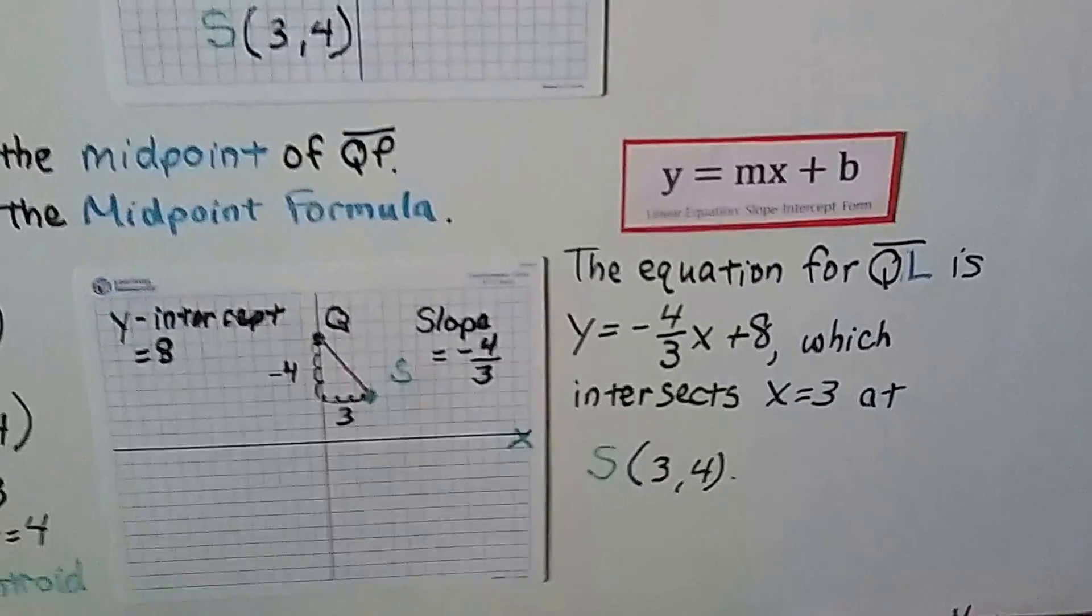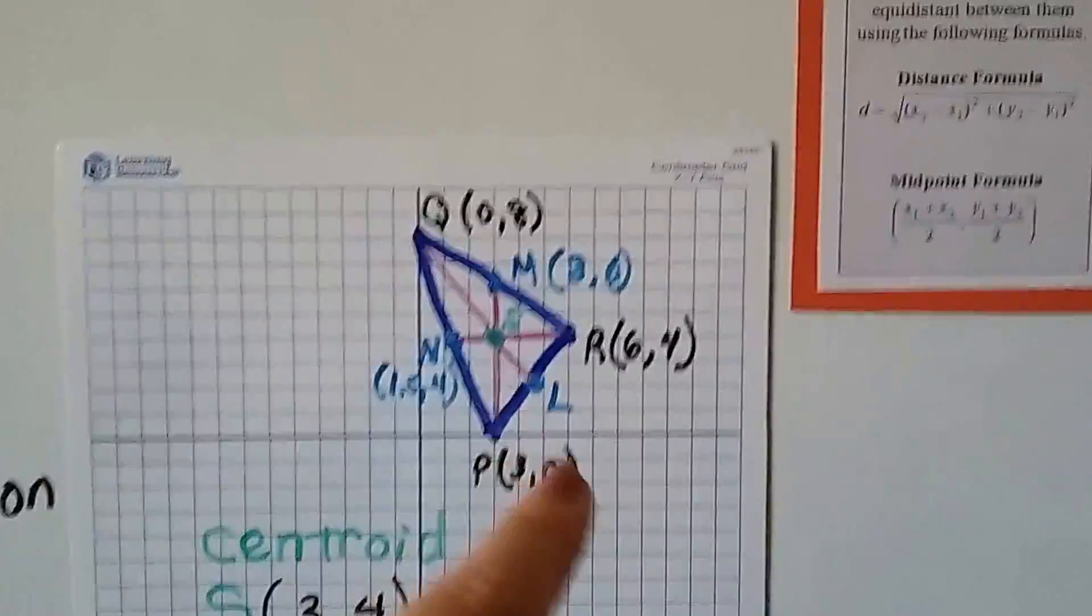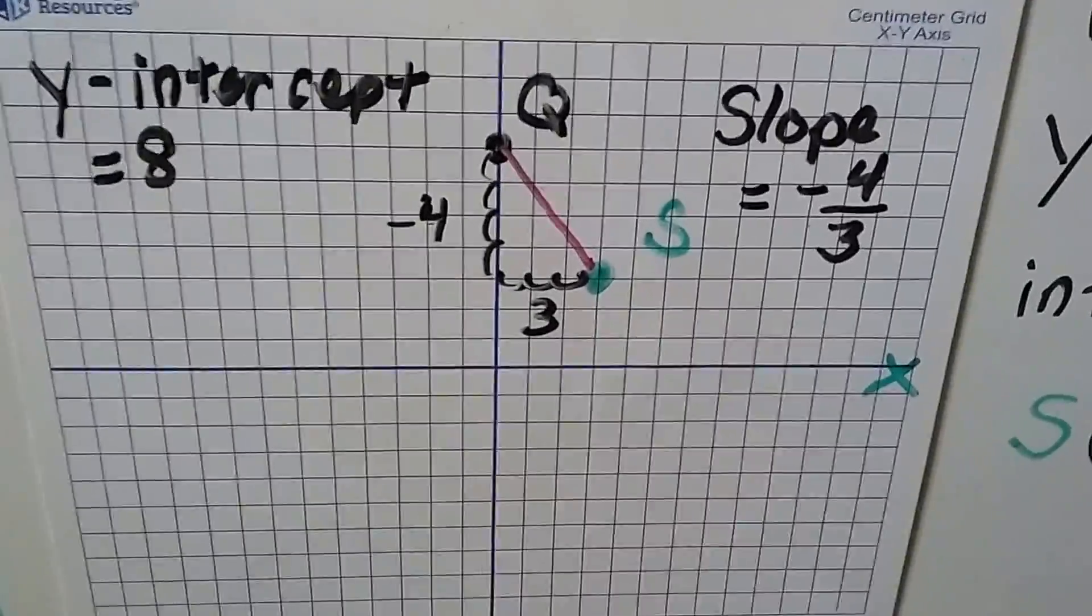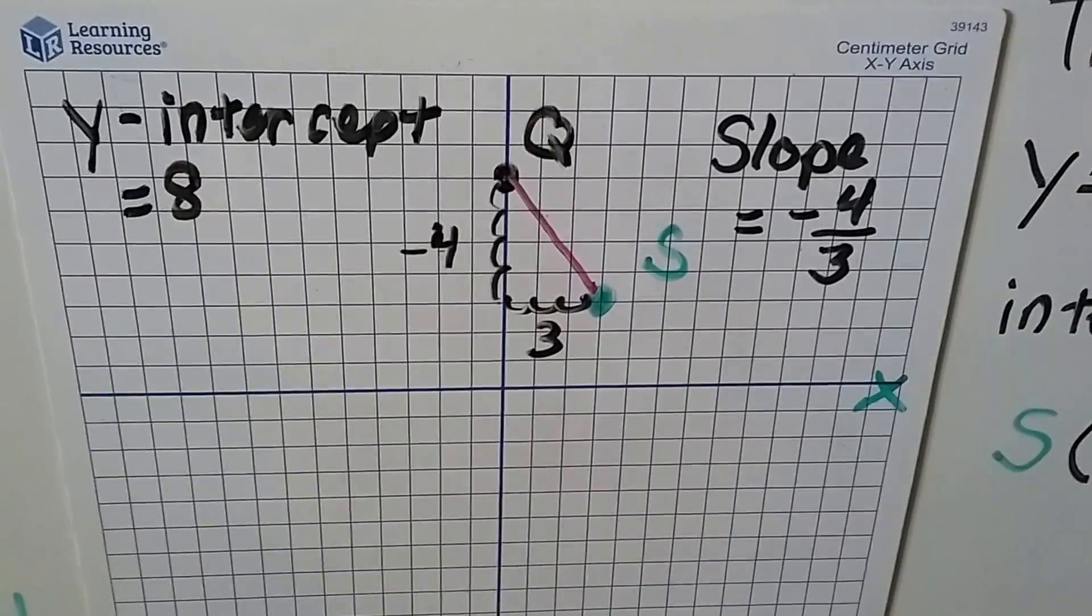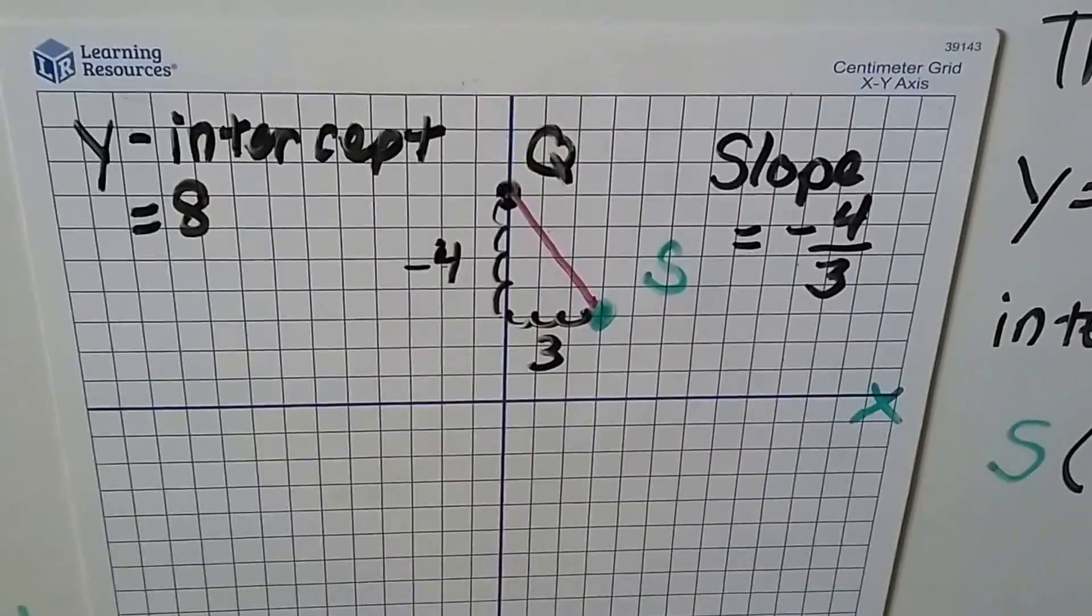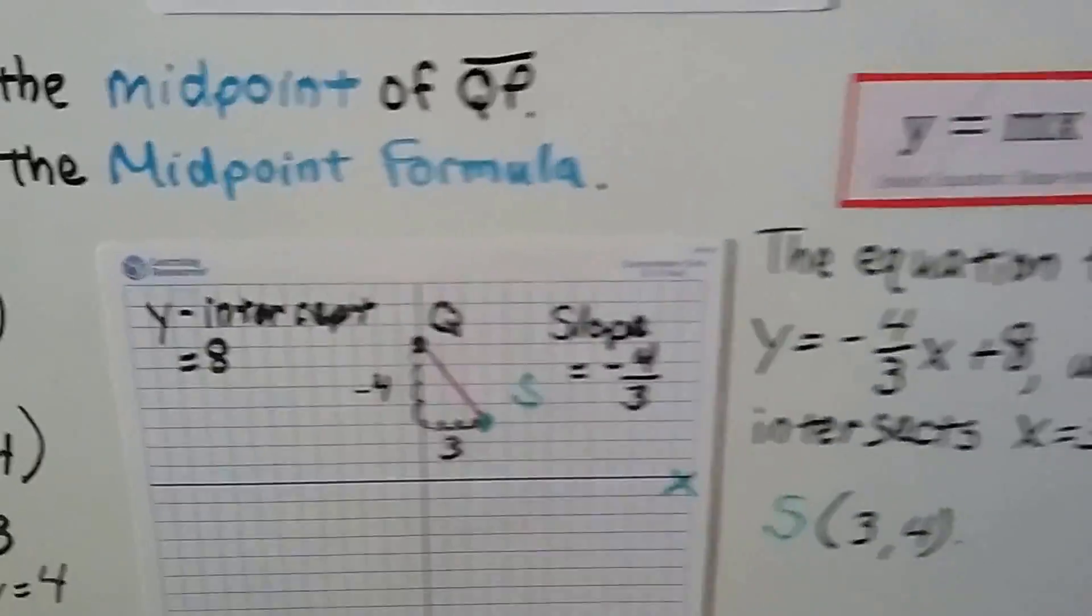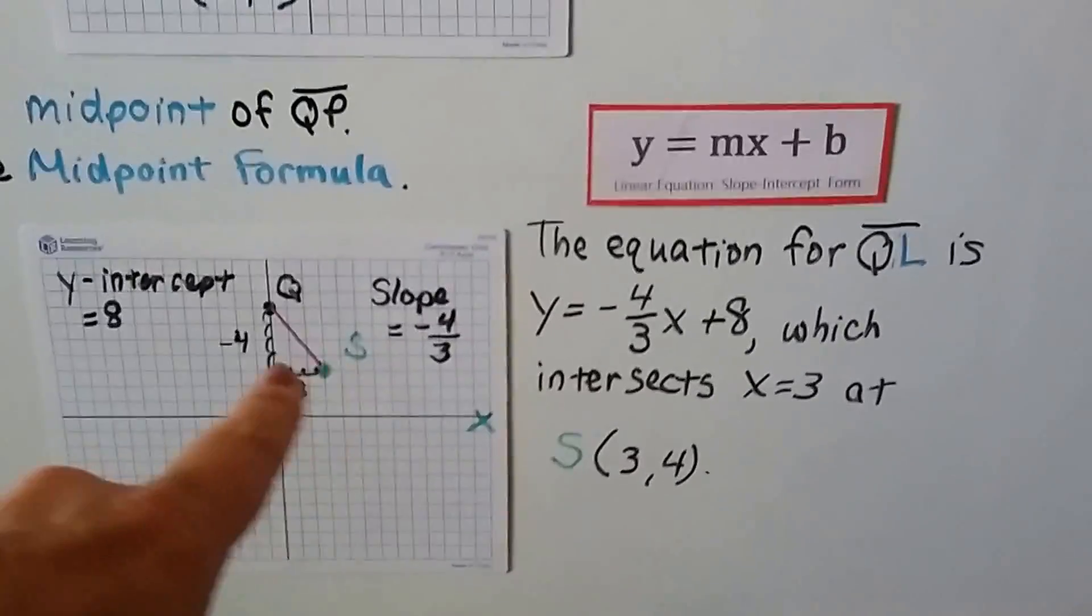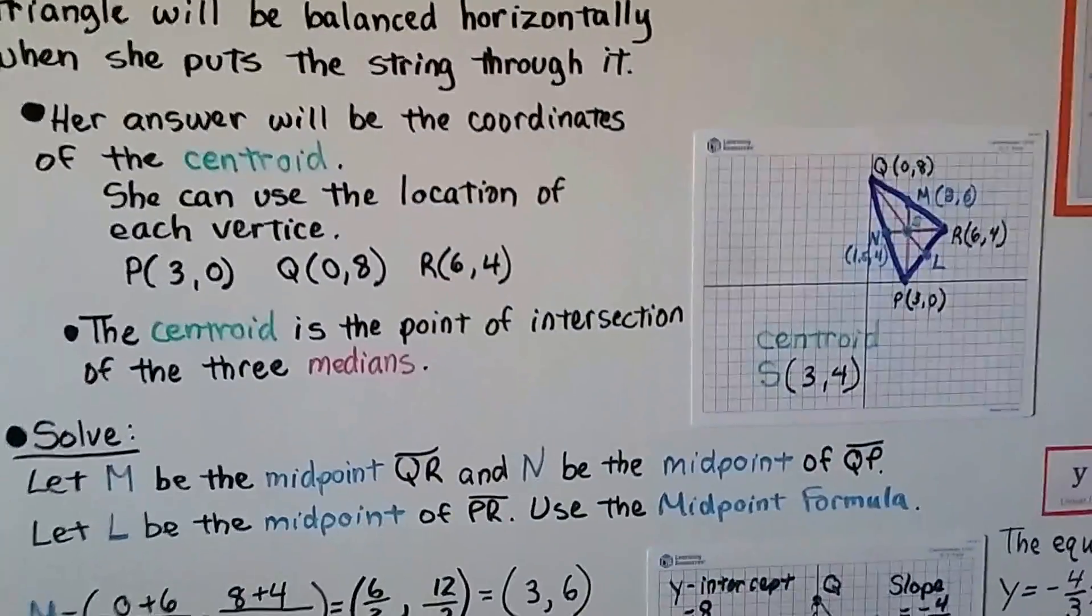Now, the equation for QL is y equals negative 4 thirds x plus 8. So if you look at QL here, we can go from Q to S, because it's linear, and we can see from Q to S, it's sloping downwards to the right, so it's a negative slope. That's a negative 4 for our rise, and then our run is 3 going across, so it's negative 4 thirds slope. And the y intercept is at 8. Q is at 8. And it intersects at x equals 3, which is 3, 4. And then all her little pieces for her mobile will be horizontal and flat, and that's the spot where she'll put the string through it.